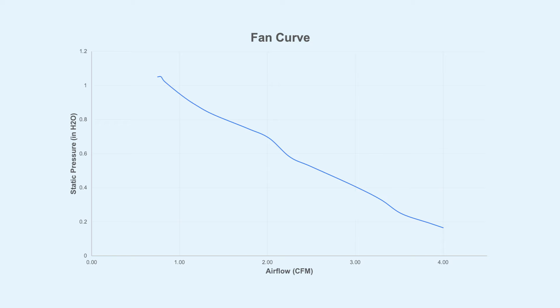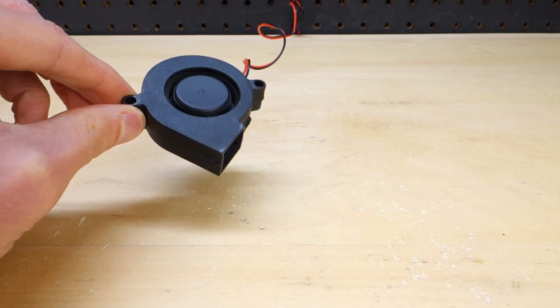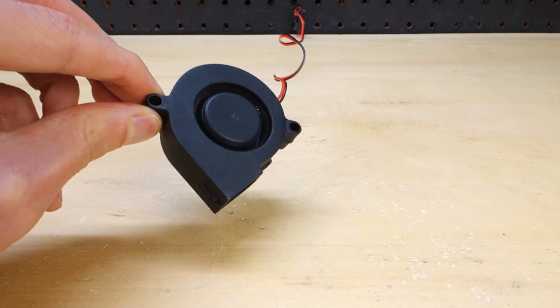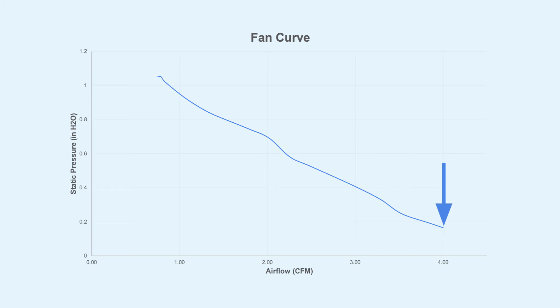But where do we begin? Let's begin with the point on the very right. This is pretty much where the fan is basically fully open. There's very little resistance to the airflow and it's pretty much the most air the fan will blow. So basically this blower fan can blow 4 CFM with just under 0.2 inches of water of static pressure, which basically stands for how much resistance there is to airflow.